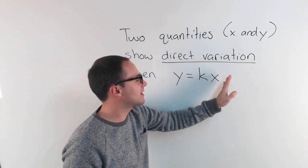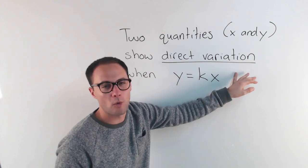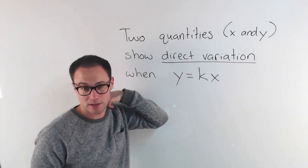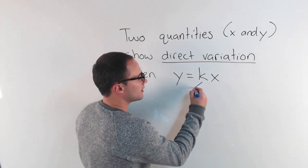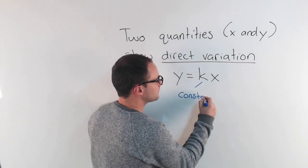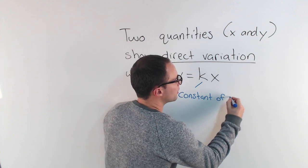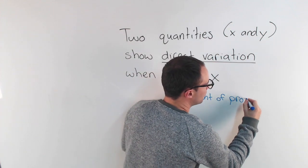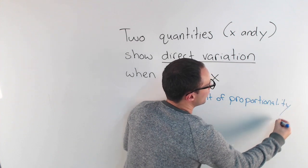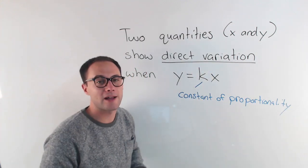If not, if you've got something extra like minus 1 or plus 7, then they're not showing direct variation. Okay, now this k, this k we call the constant of proportionality. It's a long word. Constant of proportionality.